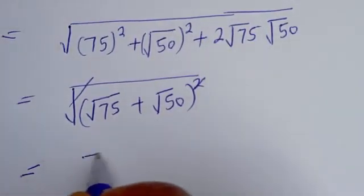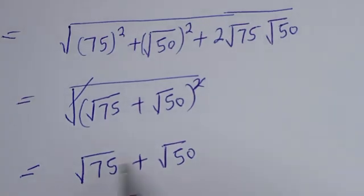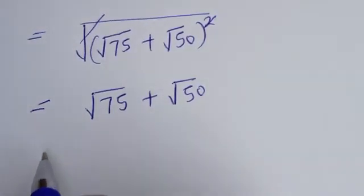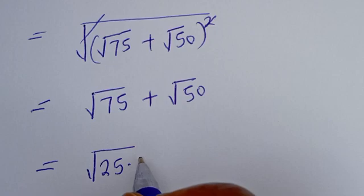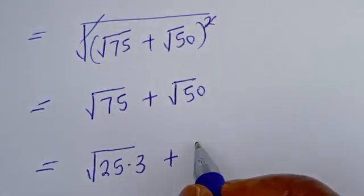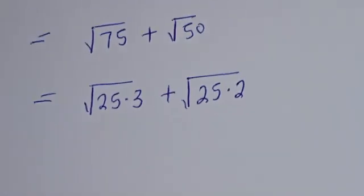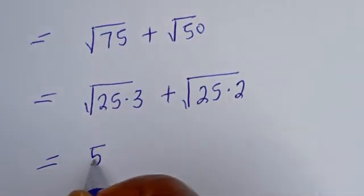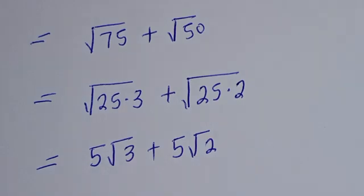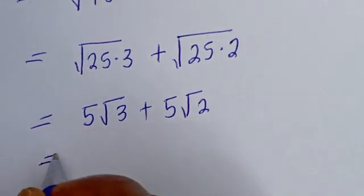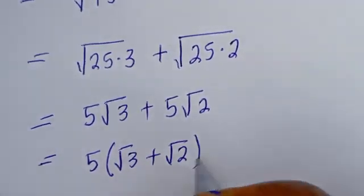This is equal to square root of 75 plus square root of 50. We can expand further: square root of 75 is square root of 25 times 3, which is 5 root 3, and square root of 50 is square root of 25 times 2, which is 5 root 2. Since 5 is common, we can factor it out: 5 times the quantity root 3 plus root 2.